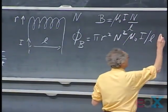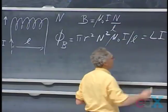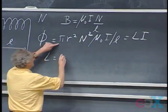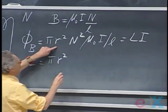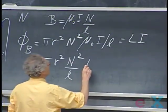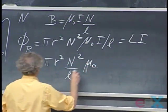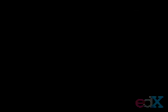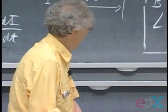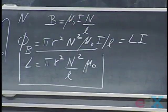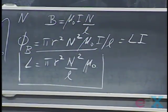We have μ₀ I divided by l. This we call L times I — that's our definition for self-inductance. So the self-inductance L is purely geometry: π r² times N² divided by l, times μ₀. Let me check: π r², capital N², μ₀, divided by little l. That's correct.